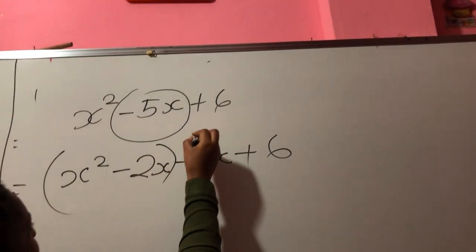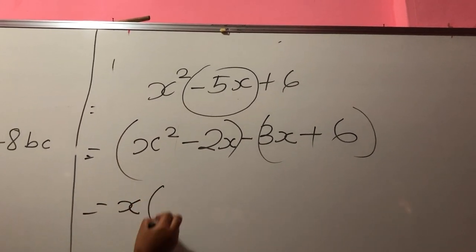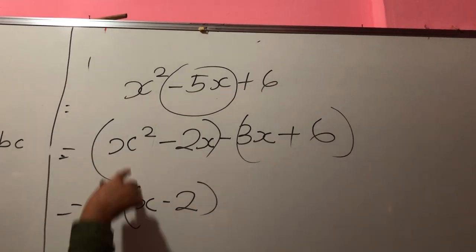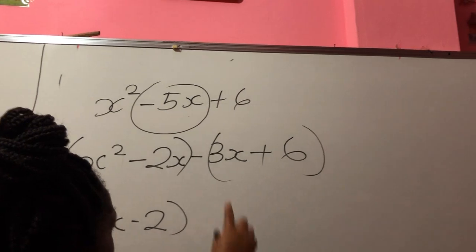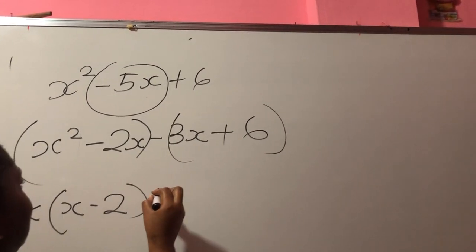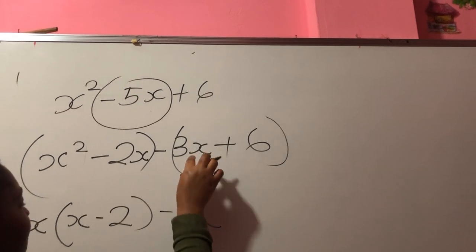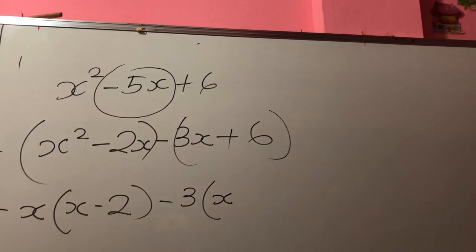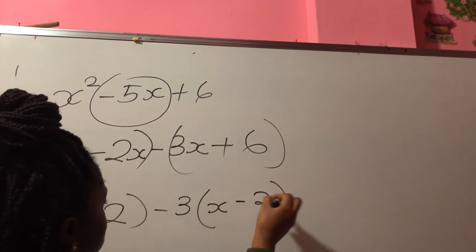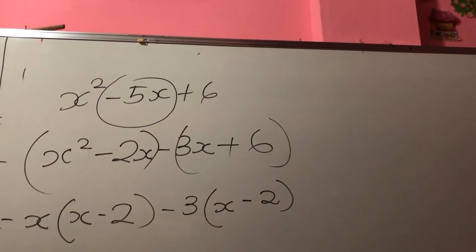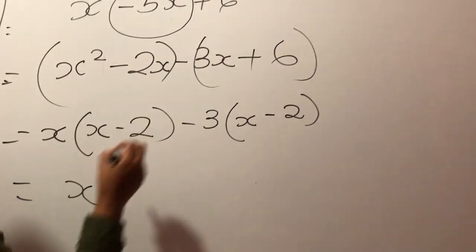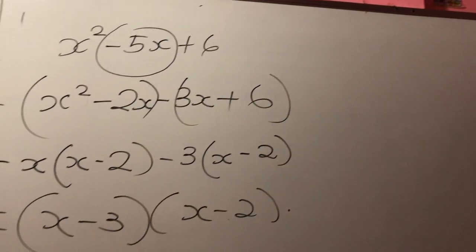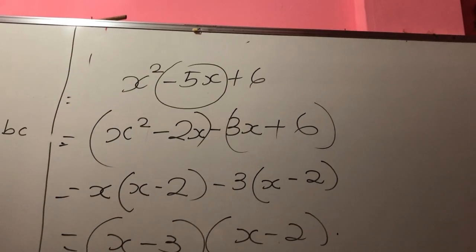Now we can do our groupings. What is common in the first group? X. So you have X here, and minus 2 inside the bracket — so X squared and minus 2x. What is the common factor in the second group? 3. So I bring my minus and my 3. What am I left with? X. Minus 3 times minus 2 gives you positive 6. So outside the bracket we have X and minus 3. Luckily these brackets are the same, so this is your answer.